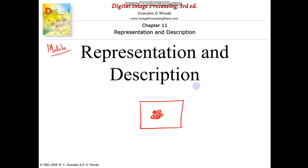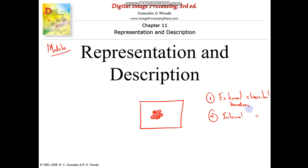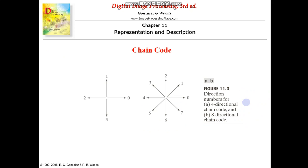This representation can be of two types: one is based on external characteristics and the second is based on internal characteristics. External characteristics means based on the boundary, and internal characteristics means pixels. Internal characteristics-based segmentation is used when the primary focus is on regional properties such as color and texture, whereas in external characteristics the focus is more on the shape, so we take the boundary.